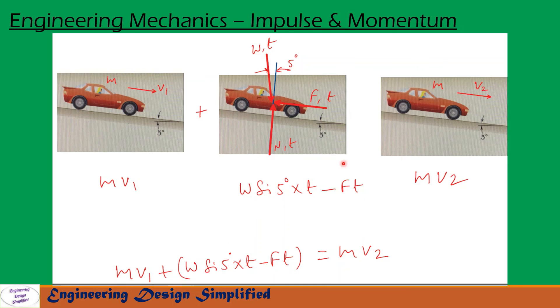So from this diagram, we can write m·v₁ + W·sin(5°)·t - F·t = m·v₂. Here, m·v₁ is the initial momentum, m·v₂ is the final momentum, and the middle terms represent the net impulse on this car.